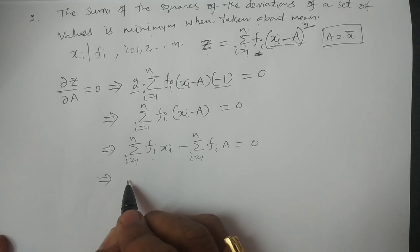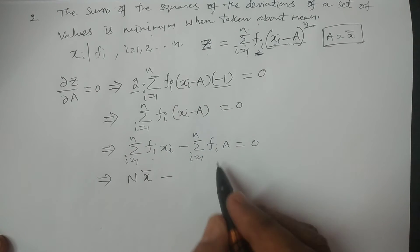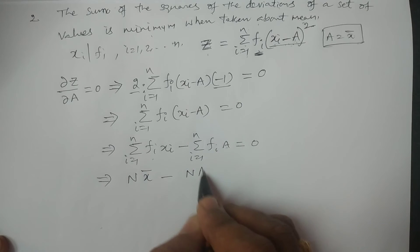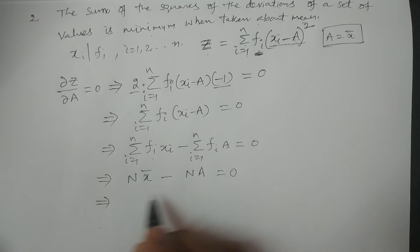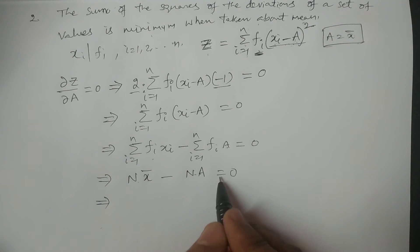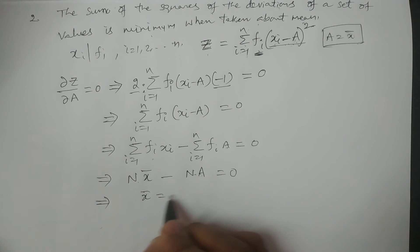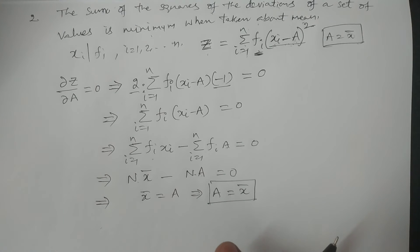Expanding: summation fi xi minus summation fi into a equals zero. Summation fi xi is capital N into x̄, and since a is a constant, summation fi into a is a into capital N. Cancelling capital N, we get x̄ equals a, which implies a equals x̄.